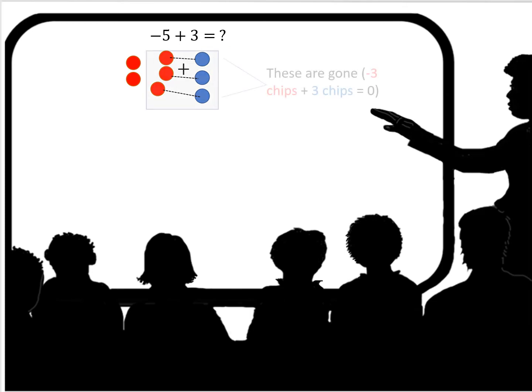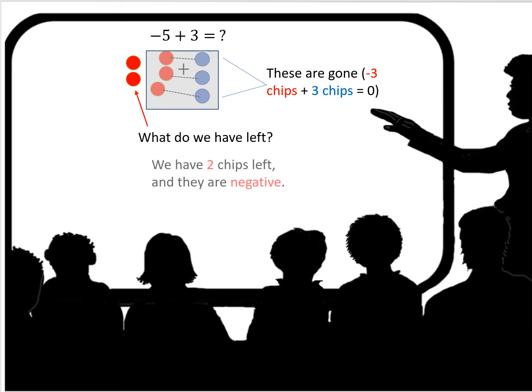So this is what we just did. Well the ones that we paired up, those are gone. Negative 3 chips plus 3 positive chips equals 0. So those are gone. What do we have left? We have two chips left and they are negative. So negative 5 plus 3 equals negative 2.